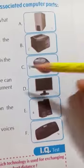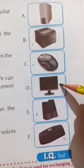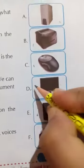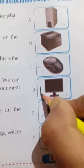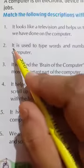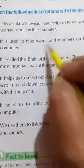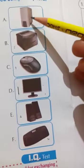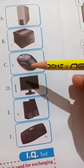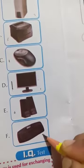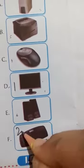It looks like a television and helps us to see what we have done on the computer. Which part is this? This is D part. We will write here number 1. Number 2: It is used to type words and numbers on the computer. Look at this picture. Which part is this? Keyboard. You will write here number 2.